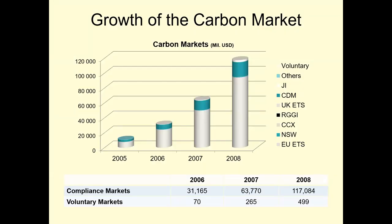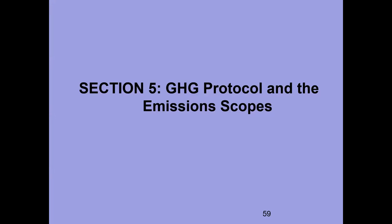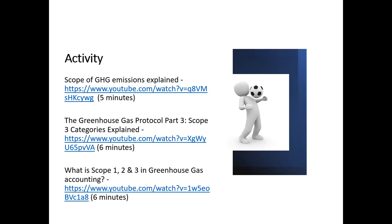Moving to the greenhouse gas protocol and emission scopes — this is critical. You can watch short activity clips: scope of greenhouse gas emissions explained (5 minutes), the greenhouse gas protocol part three on scope three categories (variable length), and what is scope one, two, three greenhouse gas accounting (6 minutes). In about 20 minutes you will have a quick understanding of what this entails. The greenhouse gas protocol — abbreviated GHG — is the global standard for companies and organizations to measure and manage their greenhouse gas emissions and become more efficient, resilient, and prosperous.